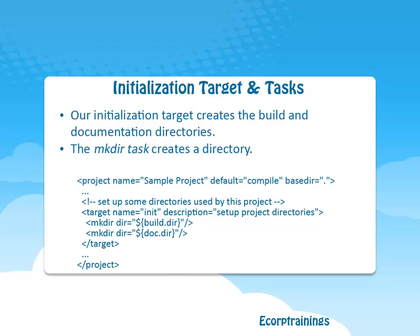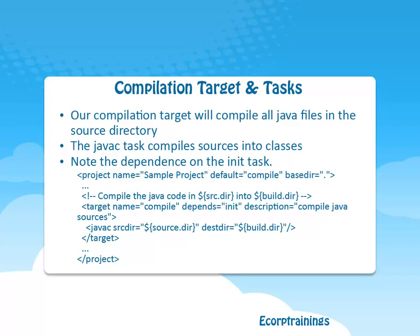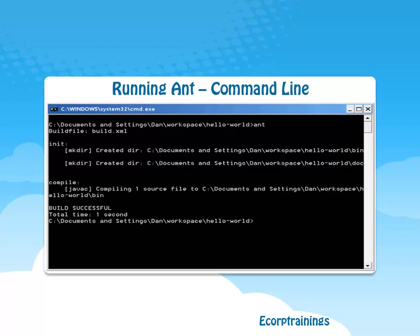Coming to initialization target and tasks of Apache Ant. Our initialization target creates the build and documentation directories. The mkdir (make directory) task creates a directory. For the compilation target and tasks, our compilation target will compile all Java files in the source directory. The javac task compiles sources into classes. Note the dependence on the init task. To run Ant from the command line, simply cd into the directory with the build.xml file and type 'ant' to run the project default target, or type 'ant' followed by the name of a target.